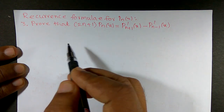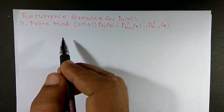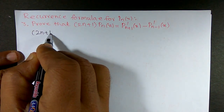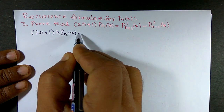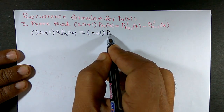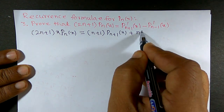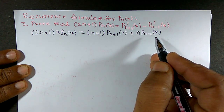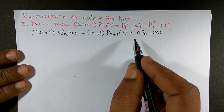We will use the previous recurrence relation — specifically, the first recurrence relation what we have proved in the last videos. The first recurrence relation is: (2n+1) · x · Pₙ(x) = (n+1) · Pₙ₊₁(x) + n · Pₙ₋₁(x). I want to take the help of this relation.